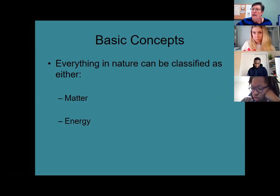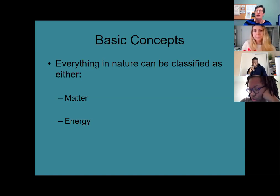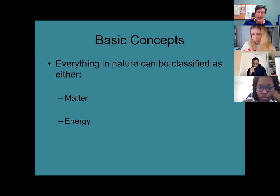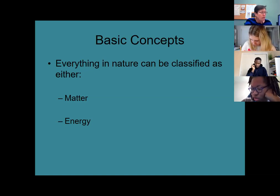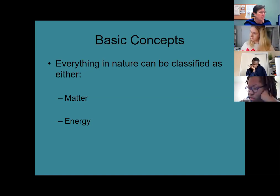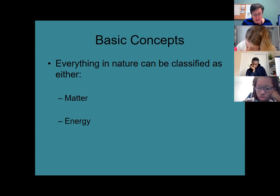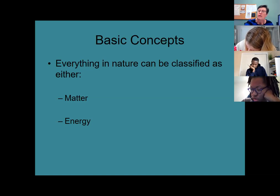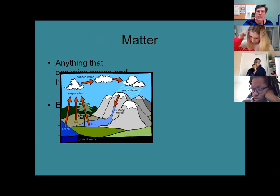When we think about our environment, everything in nature can be classified as either matter or energy. Both of these are what we call conserved quantities — we'll talk more about that later. These conserved quantities can change form, but they're always a constant amount. We'll start with some definitions of matter.